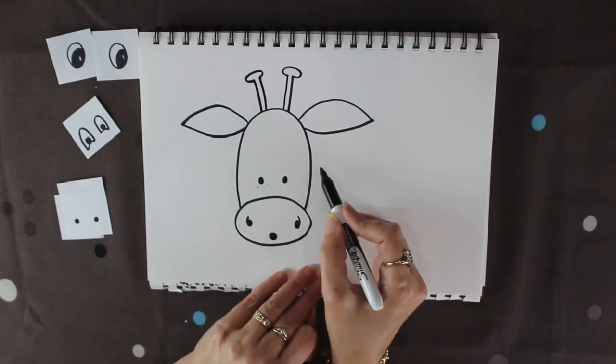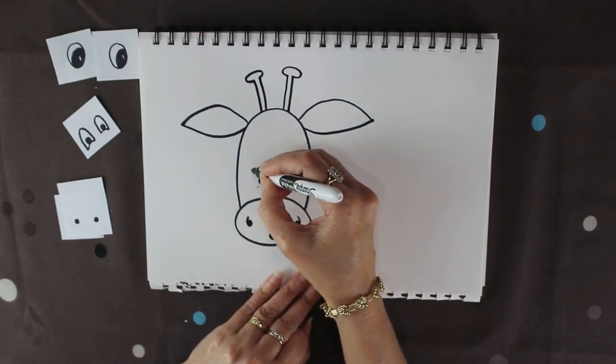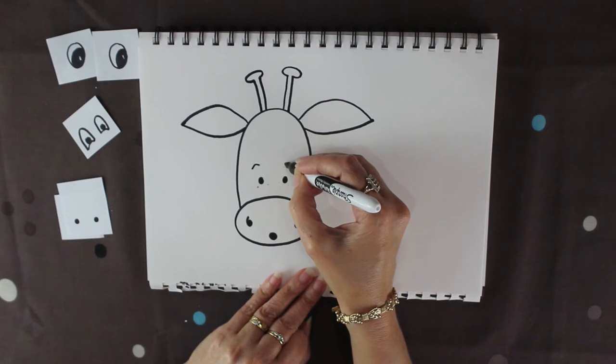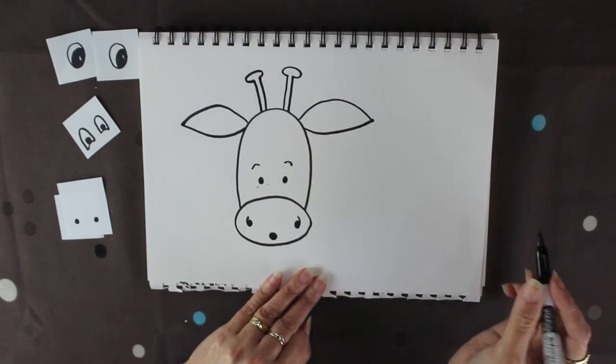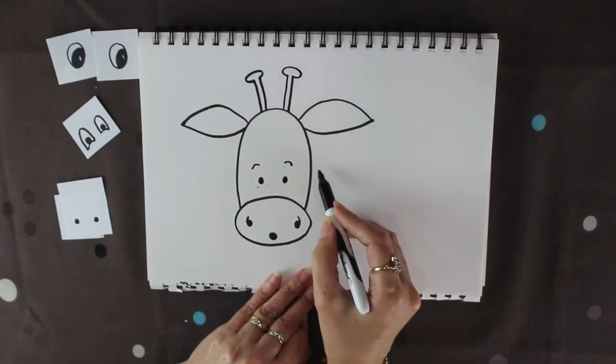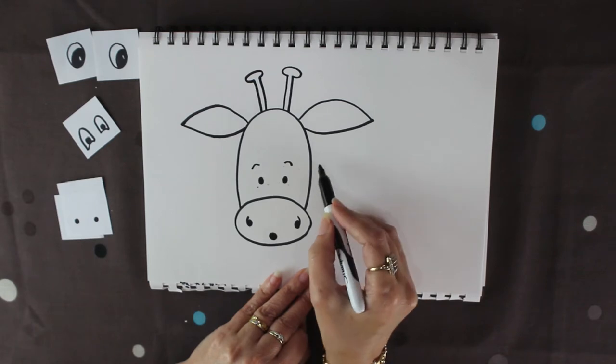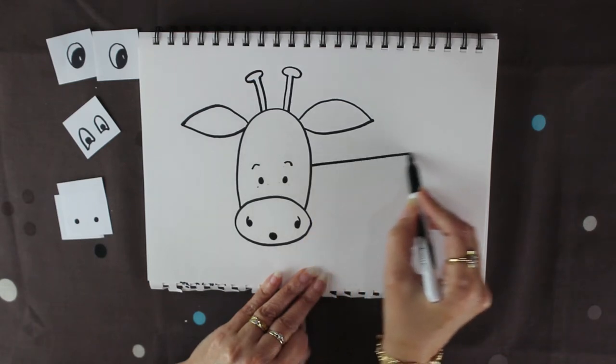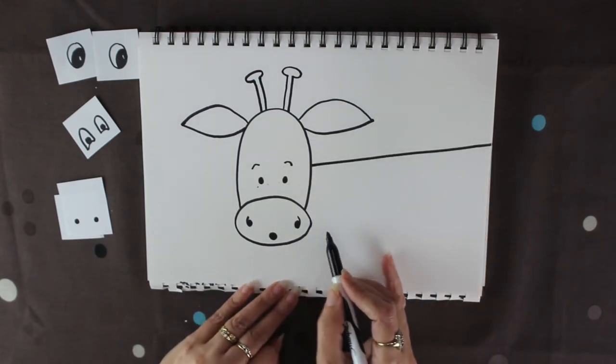And now because we want him... oh let's give him some eyebrows, just give him a little bit more character. And now we just need his neck, so we're going to have his neck come straight over like that from that side.